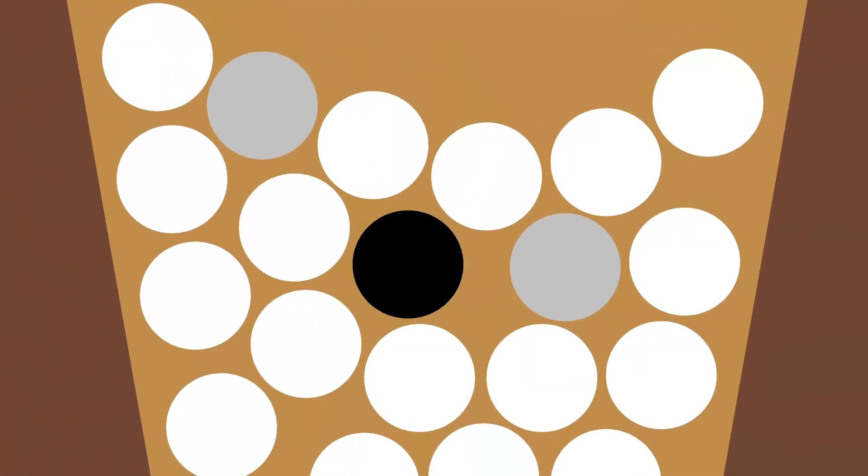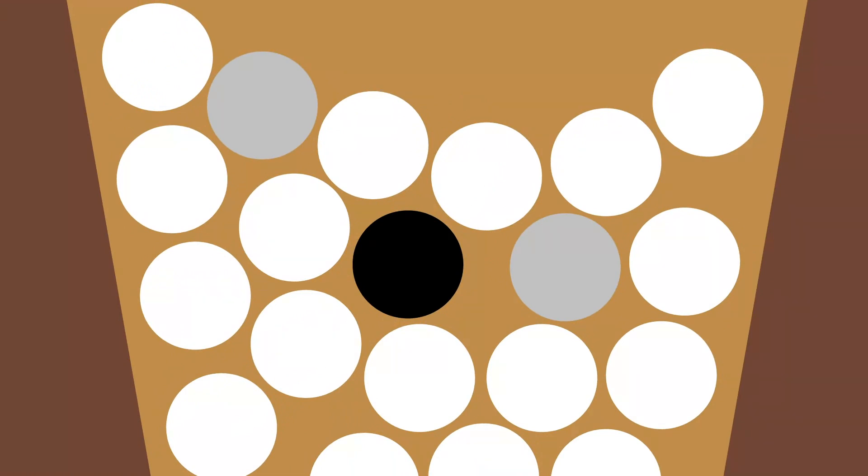Our strategy so far seems to be to just hope that the urn doesn't contain one of these black balls, because if there is one, we keep pulling out balls and eventually we will find it. We have the ability to pull out a lot of balls from this urn, but what we don't have yet is the ability to put back a ball into the urn. We can't uninvent our inventions.